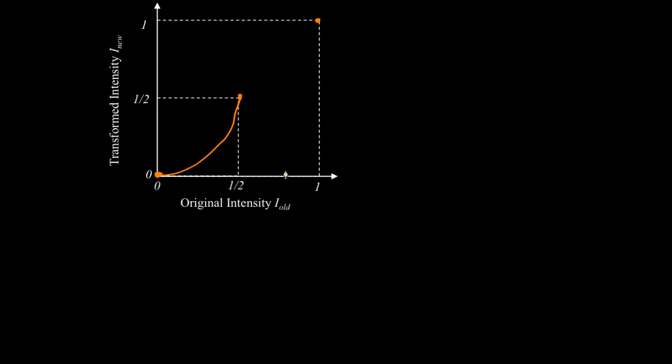And then over this region, I want to make the relatively large intensity values even larger, so I'd like my curve to stay above the diagonal over that region.